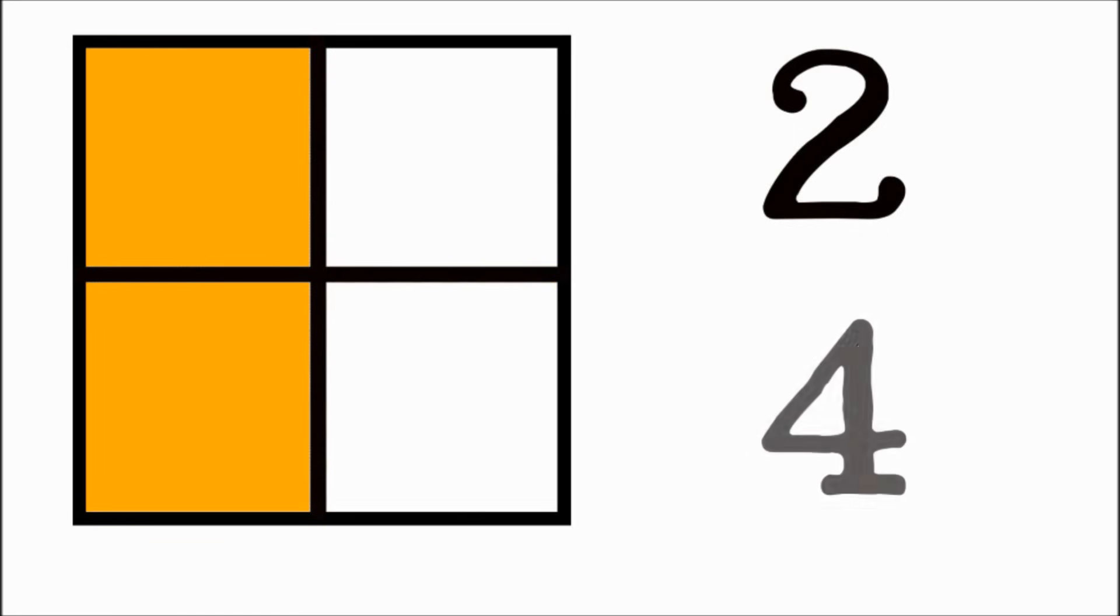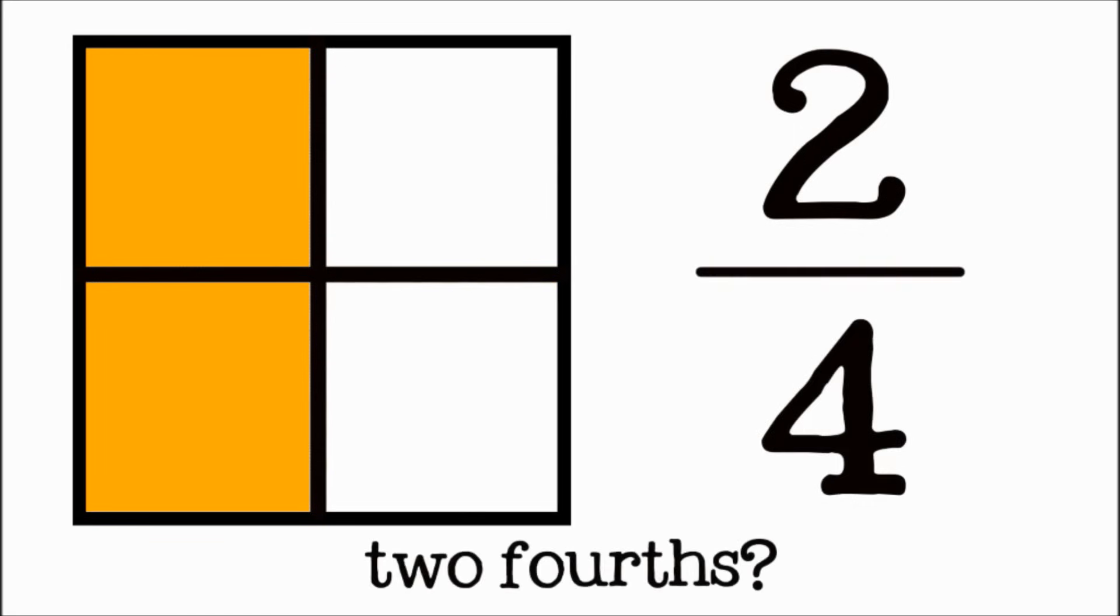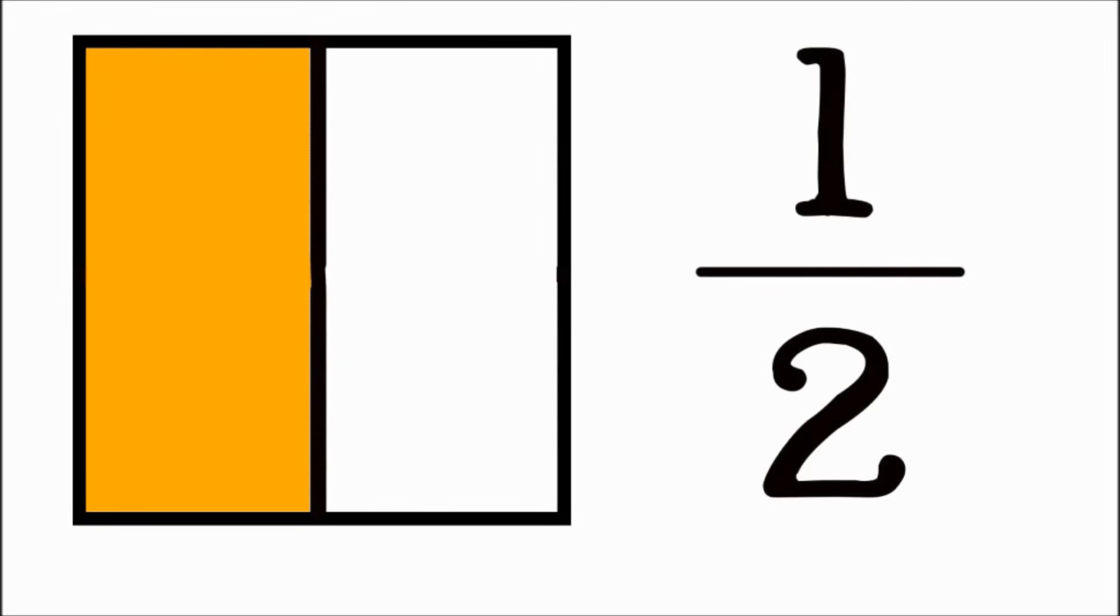Two total pieces, out of four, is two fourths, but because it is the same amount as one piece out of two, it is expressed as one half.